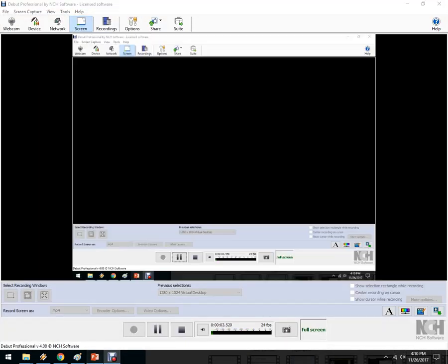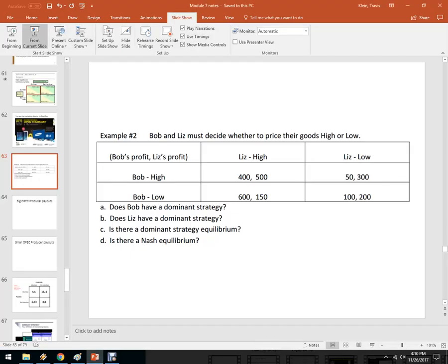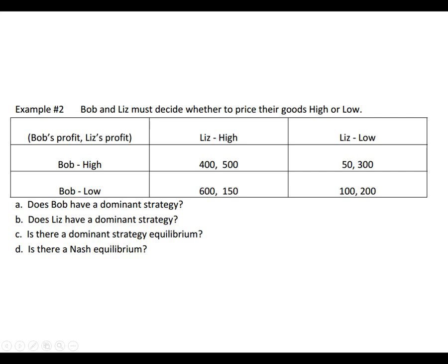Let's do some examples of analyzing a game using game theory and a payoff matrix. We've got an example here: Bob and Liz must decide whether to price their goods high or low. This is known as the pricing game.